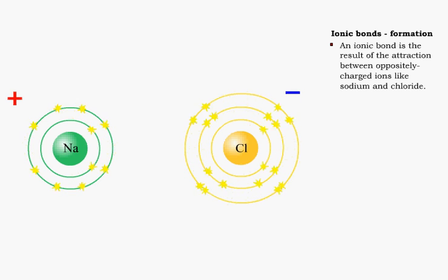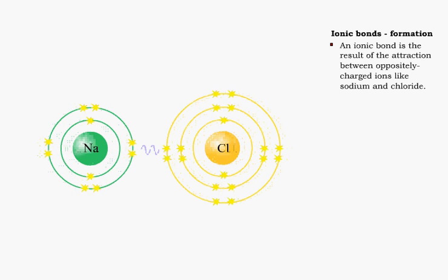The transfer of electrons that formed the sodium and chloride ions gives them opposite charges. The attraction between the opposite charges of the sodium and chloride ions is called an ionic bond.